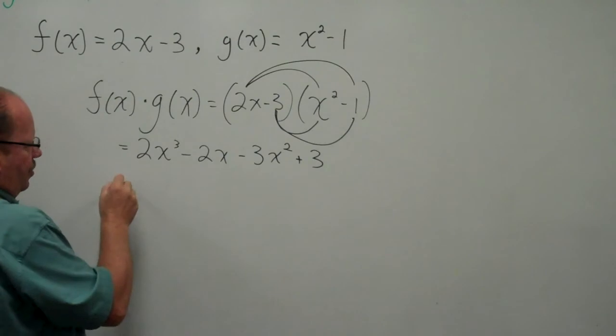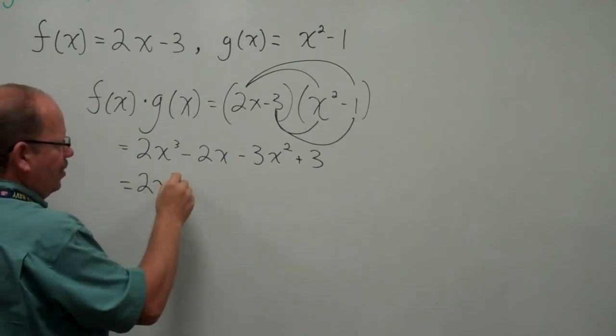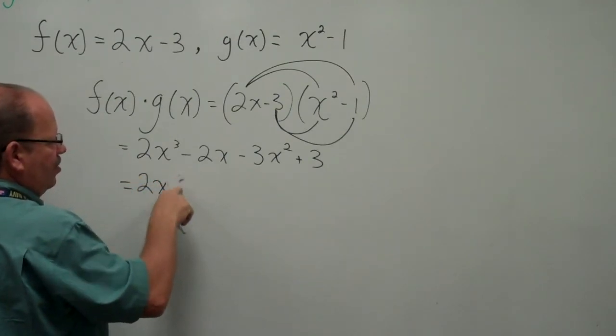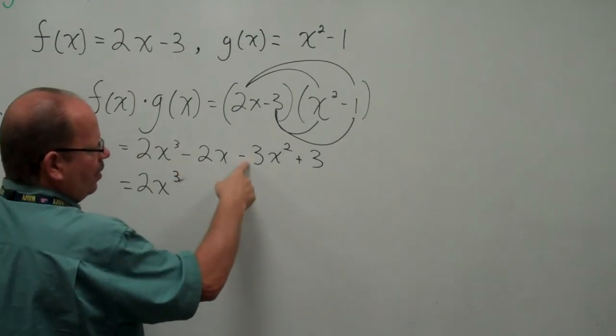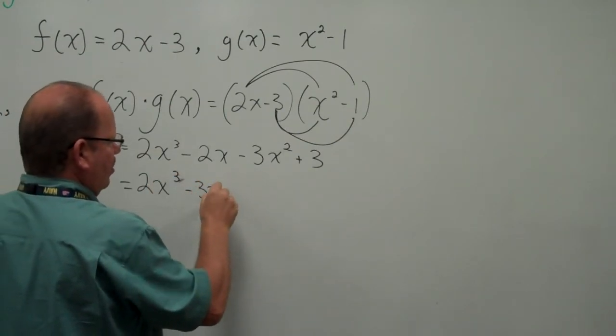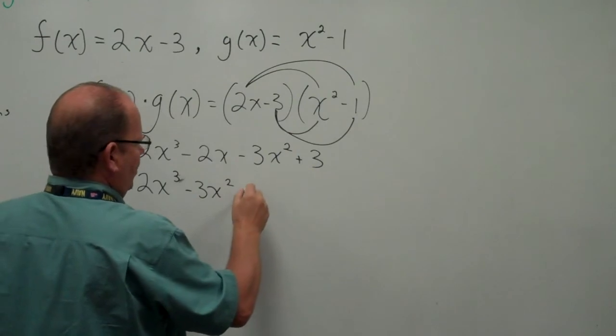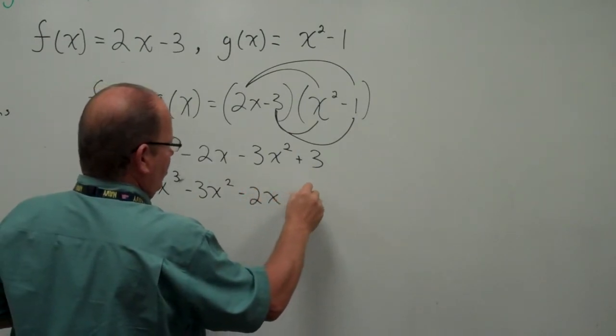Let's rewrite that again in the standard form. 2x³ - 3x² - 2x + 3.